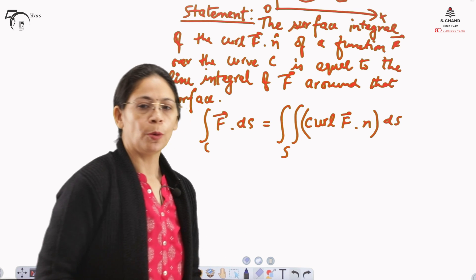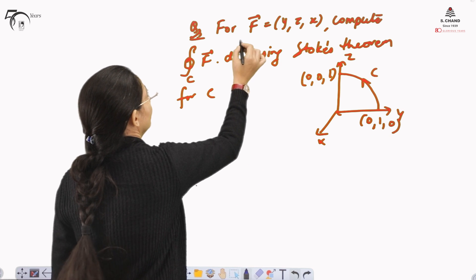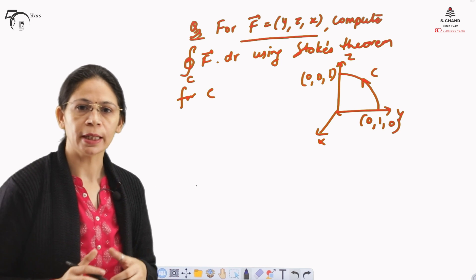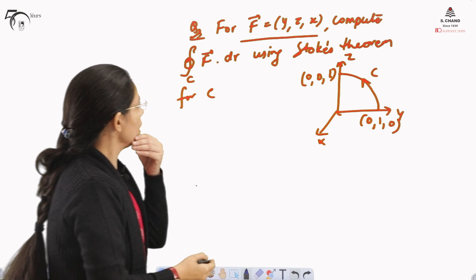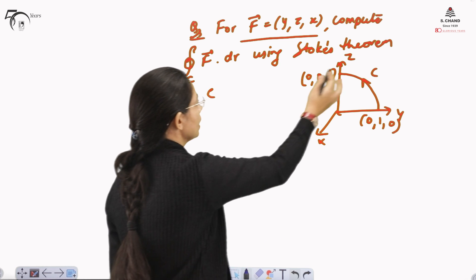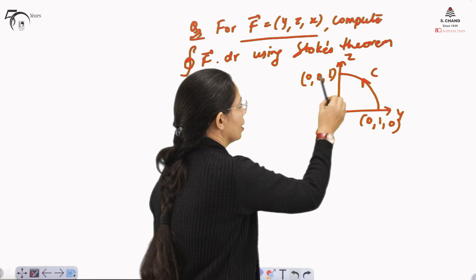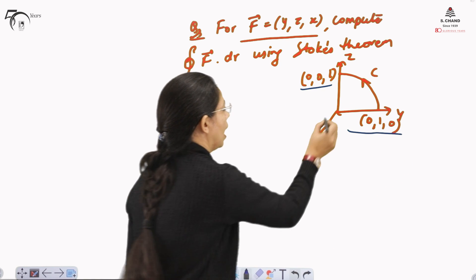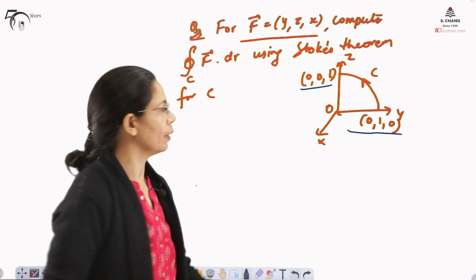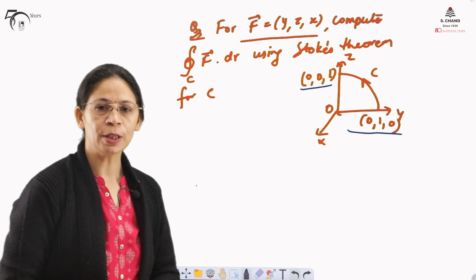To make this statement more clear, we will take one example and use Stokes' theorem to solve it. For F given as (y, z, x) — that is, the components of F in the i, j, and k directions are y, z, and x — we need to compute the line integral of this vector-valued function using Stokes' theorem for C, where C is a positively oriented closed curve in the first quadrant with anticlockwise direction.